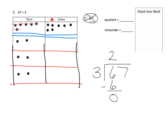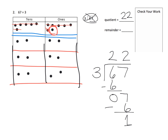Now we move to our seven ones. We take them and sort them into three piles: 1, 2, 3, 4, 5, 6. That seventh one I cannot distribute because my three groups would not be equal. So we've used six and we have one left over. In the standard algorithm: we have seven ones sorted amongst three groups, so each group gets two. We've used up six and have one left over. Our quotient is 22 and our remainder is 1.